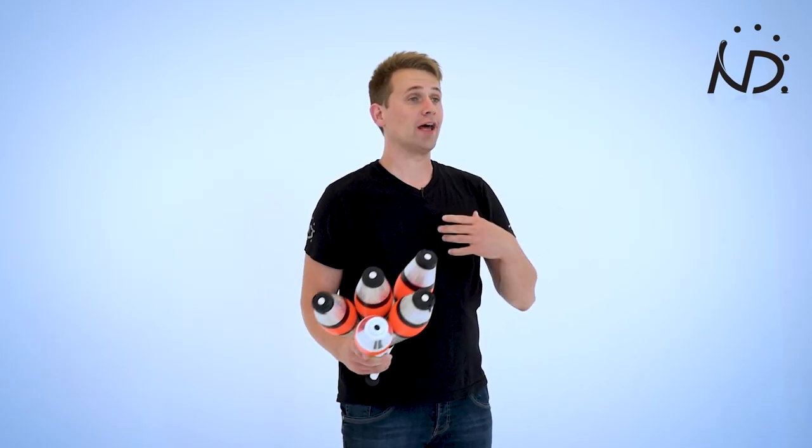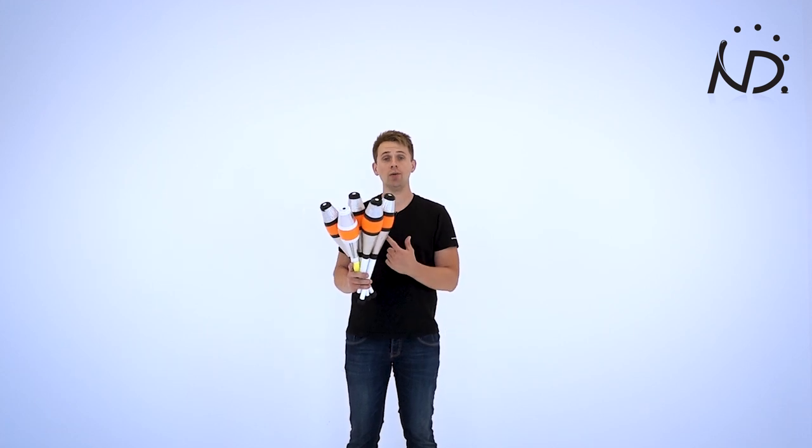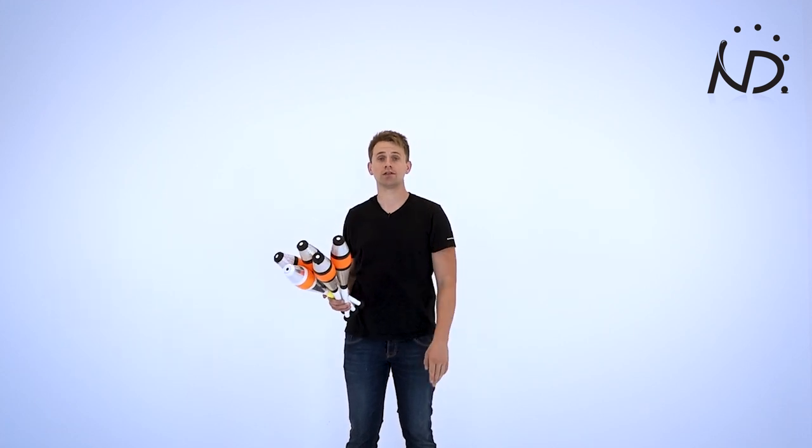As you already recognize, the pattern that I'm using is called the five club cascade. I'm using the cascade pattern, the basic trick of juggling. And as you also saw, every club made a double spin. So most jugglers, when they start learning to juggle five clubs, they start by using double spins in the cascade pattern.